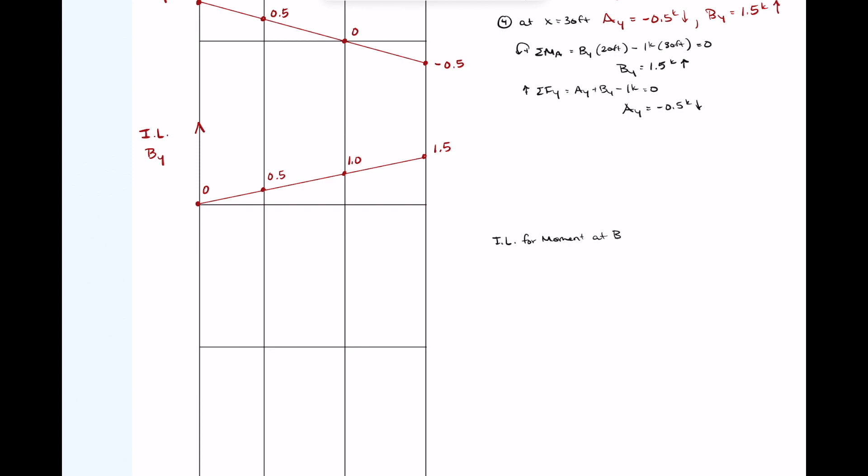We can also plot the values for BY as shown. Next, we want to look at the influence lines for the moment at B. When we do internal forces, it might be a little bit more difficult, so it won't be quite as easy as the reactions, but it's not too bad. We're just moving that unit load to different positions and solving for the internal forces at that particular position. Sometimes when we solve for internal forces, it does require us to know the reactions. Having already solved for the influence line for the reactions will help us with the internal forces for both the moment at B and the shear at point D.